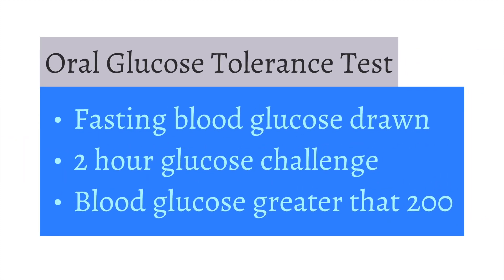The oral glucose tolerance test is when you fast for eight hours, then a fasting blood glucose is drawn. You are then asked to drink a sugary mixture of 75 grams of glucose. After two hours, you have your blood drawn to check your glucose levels. If your blood glucose is greater than 200 on the second draw, this is consistent with a diagnosis of diabetes.